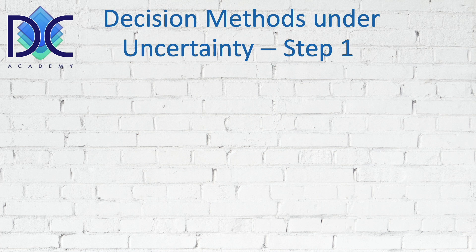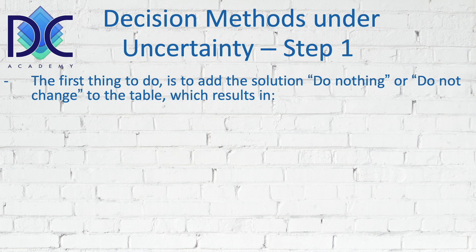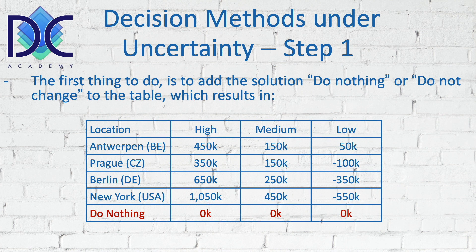When looking at decision methods under uncertainty, we always have to add the option 'do nothing' or 'do not change.' In this case, do nothing gives us zero — no profit and no loss. However, be careful: if we have an existing situation and our decision is about changing it, we need to compare with the existing situation, not just zero.